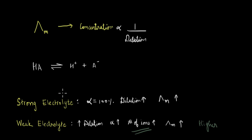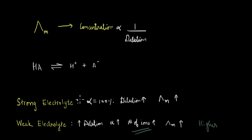For weak electrolytes where the dissociation is not 100%, even then when you increase the dilution, the molar conductivity increases. But in the case of weak electrolytes, on dilution, the increase in molar conductivity is much higher, because on dilution of a weak electrolyte, the degree of dissociation, which is alpha, increases.